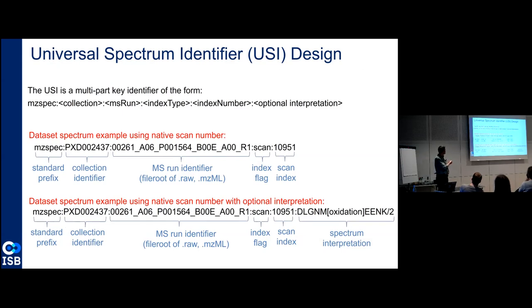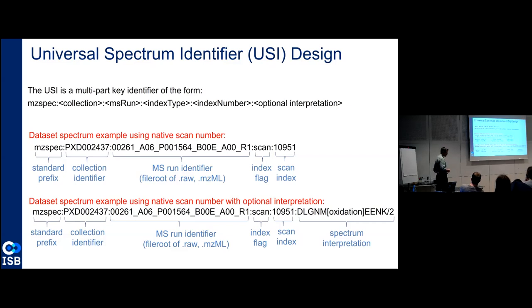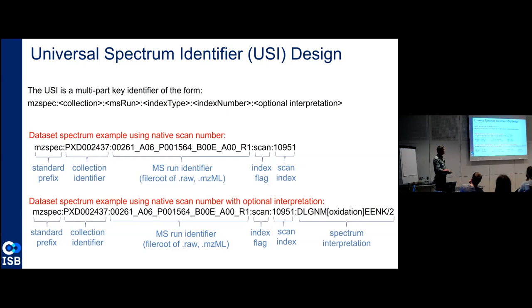Just as an example, one particular spectrum might look like: MZ-spec, then the collection identifier is a ProteomeXchange dataset identifier — PXD, whatever the number is. Within that dataset, here is the run name given by the operator. Then the index flag says 'scan' and it's referring to scan 10,951. In principle, that is really all you need to know to pull out a particular scan event from one dataset. If you know the collection, you know the MS-run, and you can tell me what scan it is, that uniquely identifies a spectrum and I can refer to and potentially pull it from a repository.